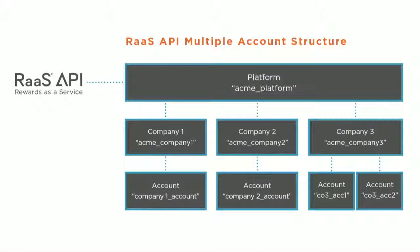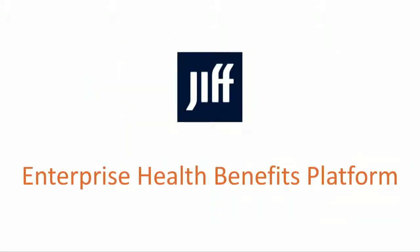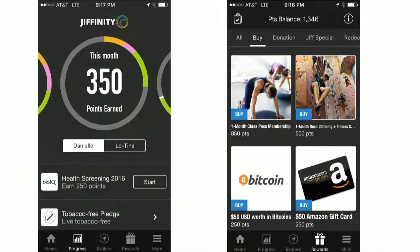Our API also has the ability to create multiple accounts beneath a platform, which is great for our platform customers for whom rewards are a critical component of their platform, which they then make available to their end customers. I'm going to demo GIF's enterprise health benefits platform, which is an example of just such a platform integration. Within the GIF user experience, each of GIF's end customers has the ability to customize their rewards catalog along with their reward email template, and they can also receive custom reporting specific to their account.